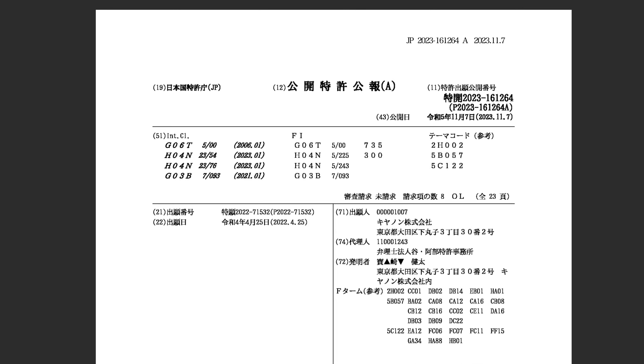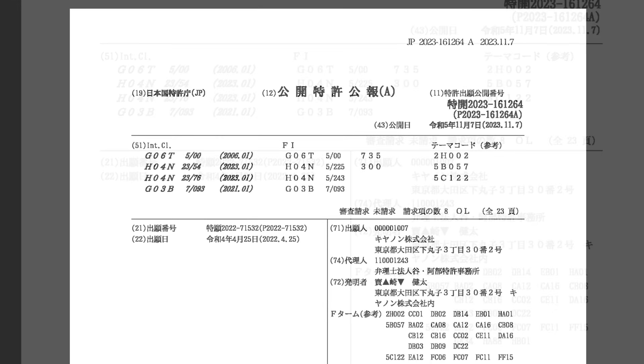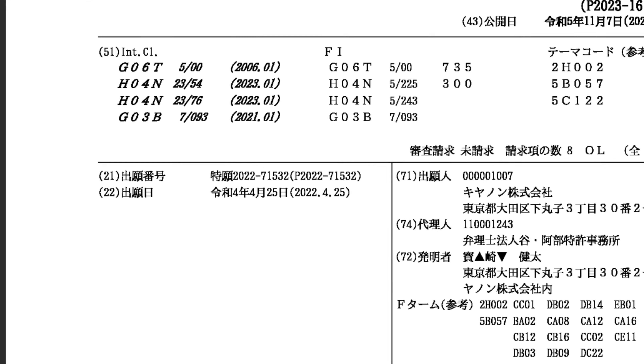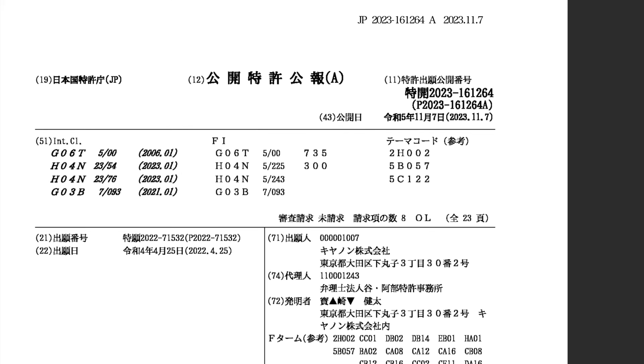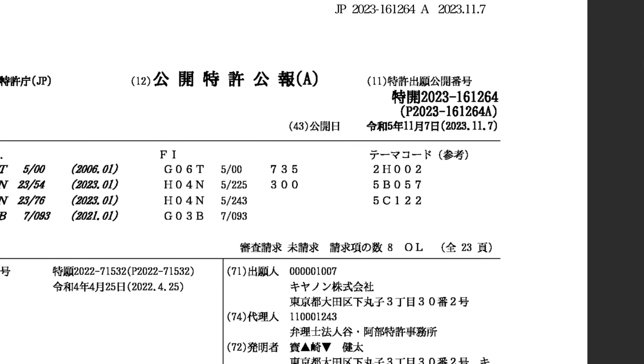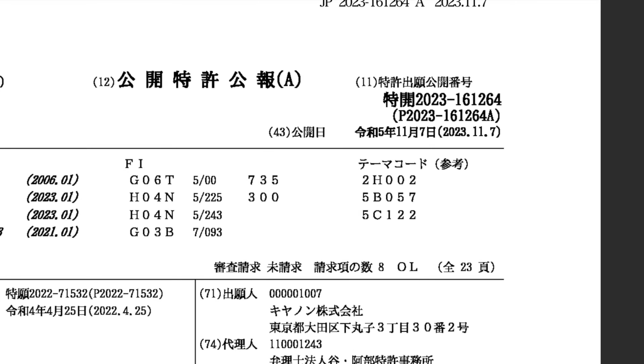In Canon patent application JP 2023-16-1264, filed on April the 25th, 2022, and published just last week on November the 7th, 2023, Canon has found a way to reduce the calculation required for correcting an error between regions caused by the image sensor.